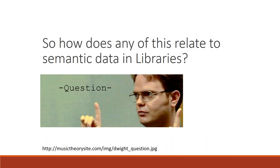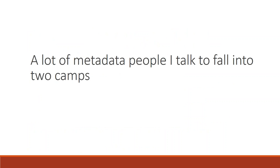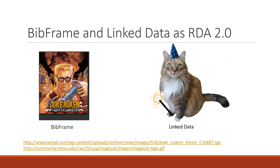How does all this relate to semantic data in libraries? When I go and talk to a lot of metadata people and get asked to do workshops on MarcEdit, people ask me about what MarcEdit can do specific things. When I think about semantic data and the people I hear talk, they kind of fall into two camps. On one hand, when folks talk about BIBFRAME and linked data, they fall into almost a vaporware category. I love the Duke Nukem reference because for a long time I thought of RDA this way.